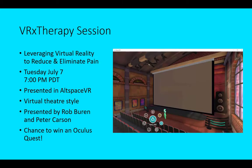There are a couple of ways to experience virtual reality as part of Comsverse. The first is a session that myself, Peter Carson, and co-presenter Rob Vuren are presenting in a virtual presentation space — a session on VRX therapy, a project around leveraging virtual reality to reduce and eliminate pain, dealing with phantom pain and amputee pain by retraining the mind. That's on Tuesday, July 7th at 7 p.m. Pacific Daylight Time, presented in AltspaceVR in a virtual theatre style. You can pick a seat, raise your hand, ask questions, and have a back-and-forth conversation. There's also a chance to win an Oculus Quest by participating.